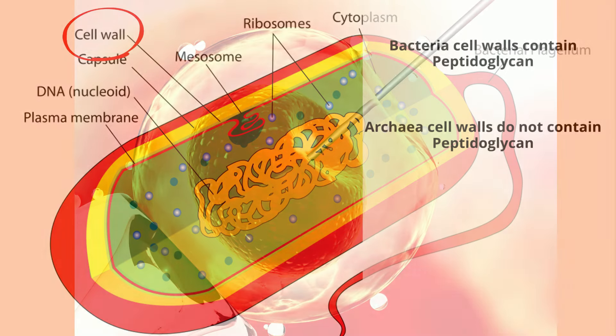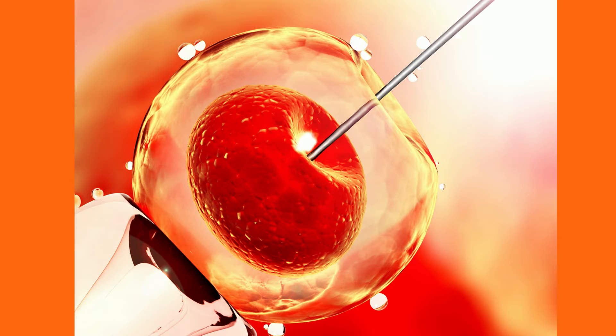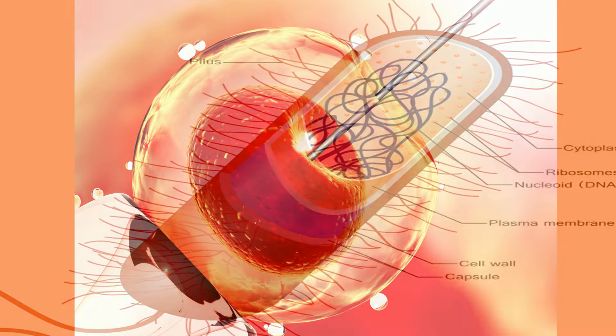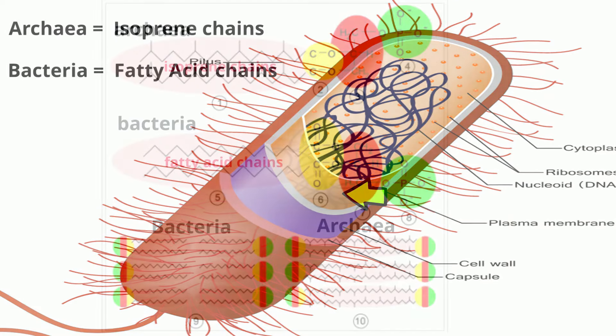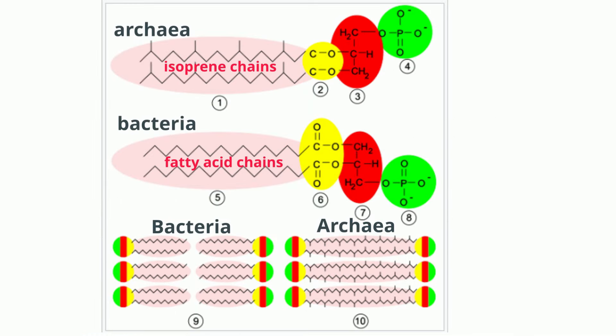Cells have membranes that surround them, allow materials in and out, and separate them from their environment. The plasma membrane of archaea uses isoprene chains instead of the fatty acid chains, which are found in bacteria.